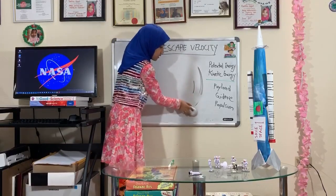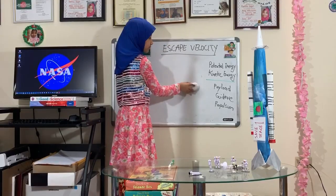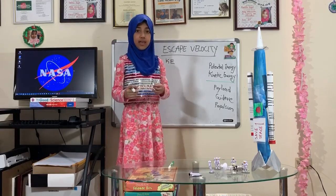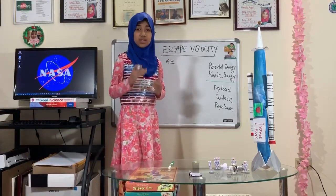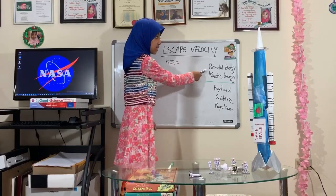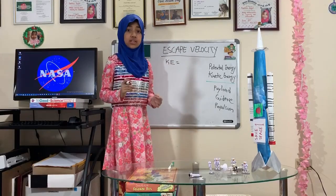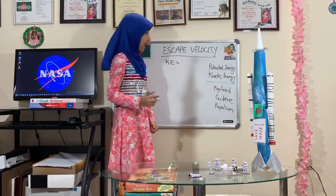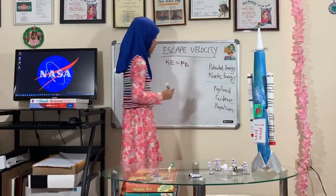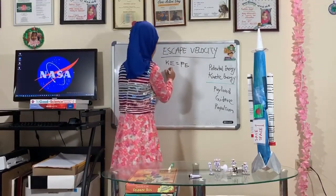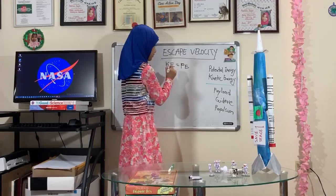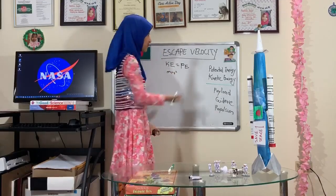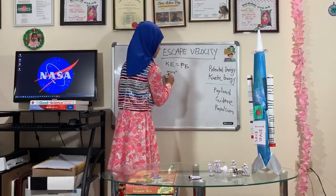Now that we know escape velocity, let me come up with the equation. Kinetic energy is when an object is moving — that is called kinetic energy. Potential energy is a stationary energy; it also has energy but it's just stationary, which means it's staying still and not moving. The kinetic energy here is: one half times the mass of the rocket times the velocity squared — and velocity, as I told you, is another word for speed.